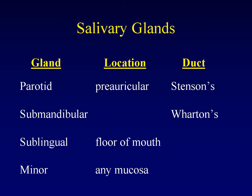The sublingual glands live in the floor of the mouth. Their drainage pathway varies — sometimes they join Wharton's duct, and sometimes they drain independently into the floor of the mouth. Minor salivary glands are dotted throughout all of the mucosal surfaces, and thus the spectrum of pathology we are discussing can arise essentially on any mucosal surface.